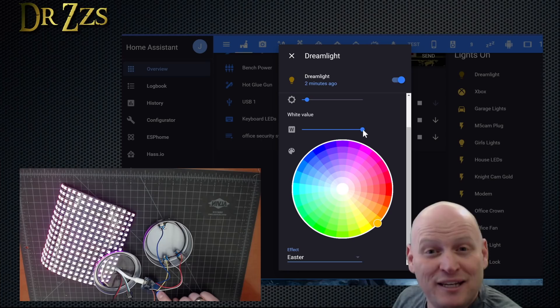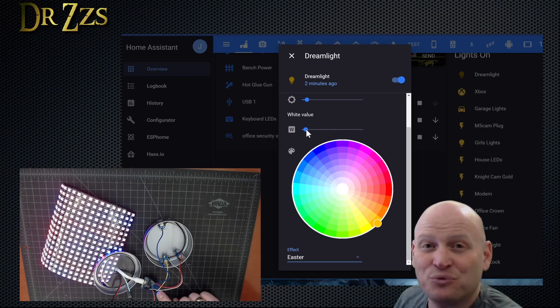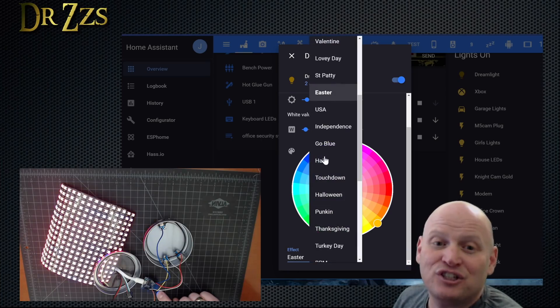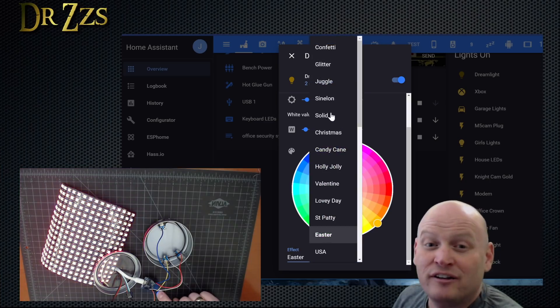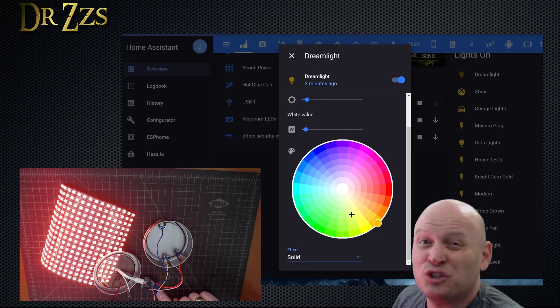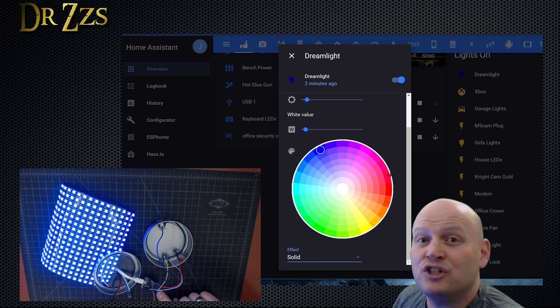You can change the speed at which the effects run. And here, you can change the effects. When you're on an effect that is controllable by colors, and there are, I think, five of those, then you can change the colors as well here with the color wheel.